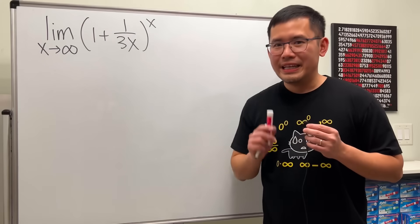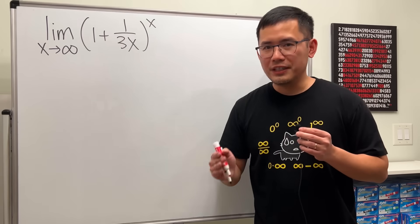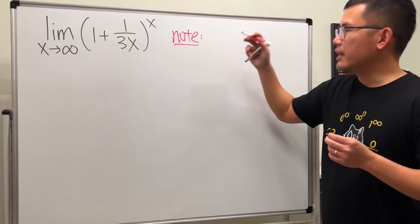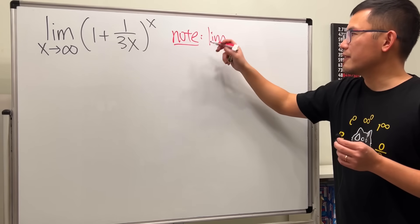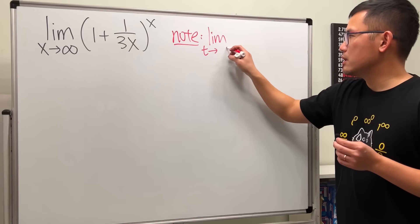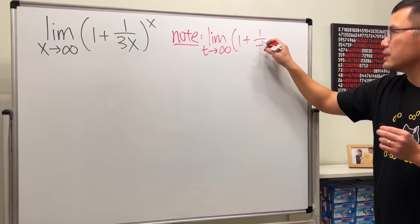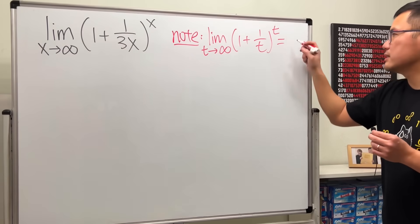Well, in fact, this limit is very close to a definition of e. Let me write this down for you. Note, you can take this limit as the definition of e. The limit as some variable, I used x already, so let's use t. t goes to infinity of 1 plus 1 over t raised to the t's power. This is going to be e.